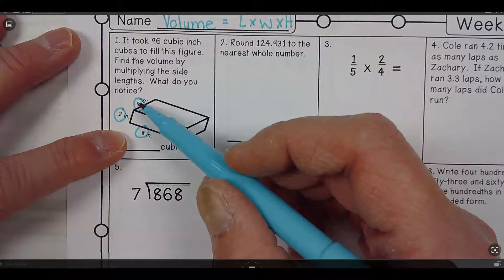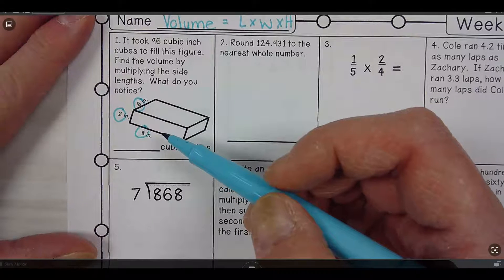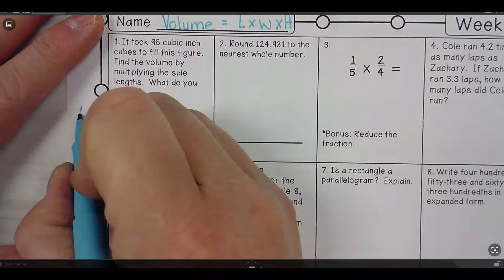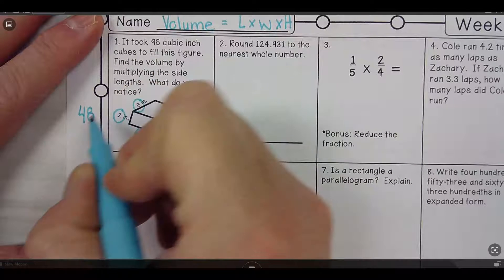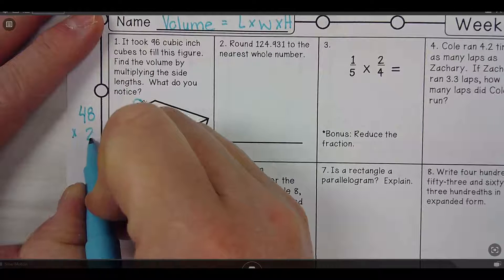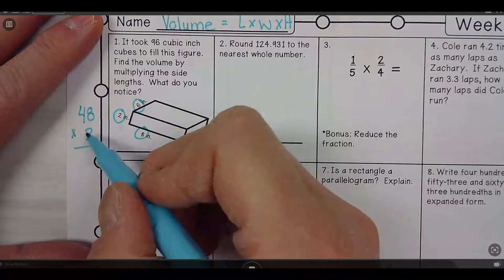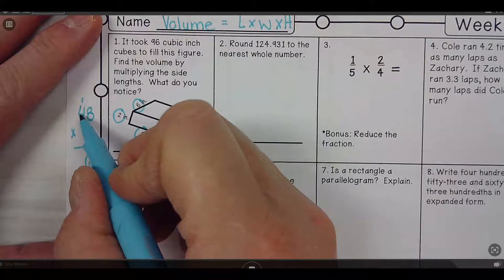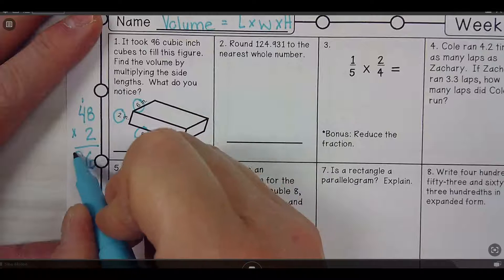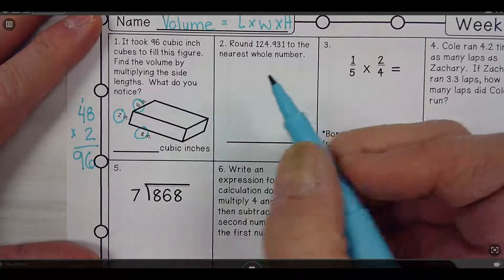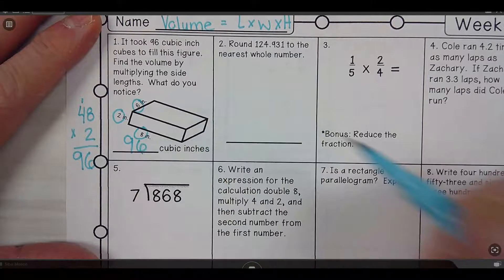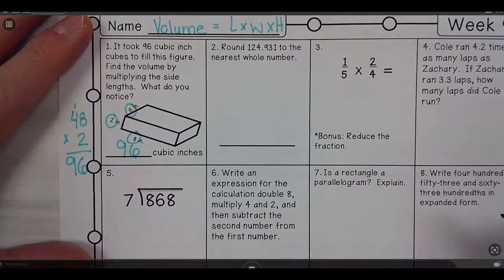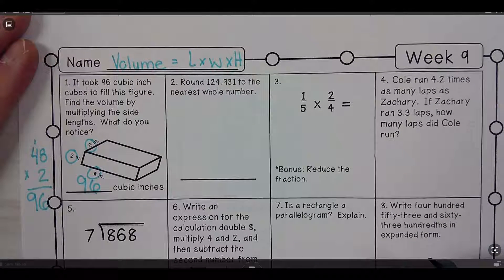I have 8 times 6. 8 times 6 is 48, 48 times 2. 8 times 2 is 16, carry my 1. 2 times 4 is 8 plus 1 is 9. So it would be 96 cubic inches.